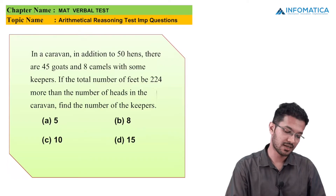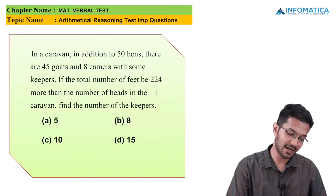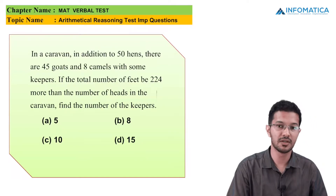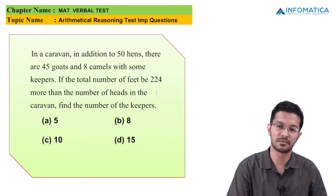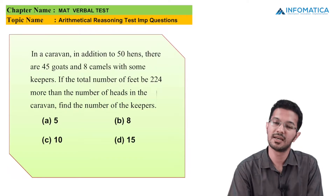The first MCQ says that in a caravan, in addition to 50 hens, there are 45 goats and 8 camels with some keepers. If the total number of feet is 224 more than the number of heads in the caravan, find the number of the keepers. Let us solve the MCQ. Let the number of keepers be X.